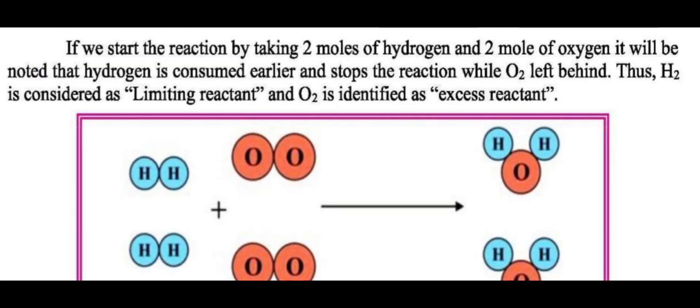If we start the reaction by taking two moles of hydrogen and two moles of oxygen, it will be noted that hydrogen is consumed earlier and stops the reaction, while O₂ is left behind. Therefore, H₂ is considered the limiting reactant and O₂ is the excess reactant.